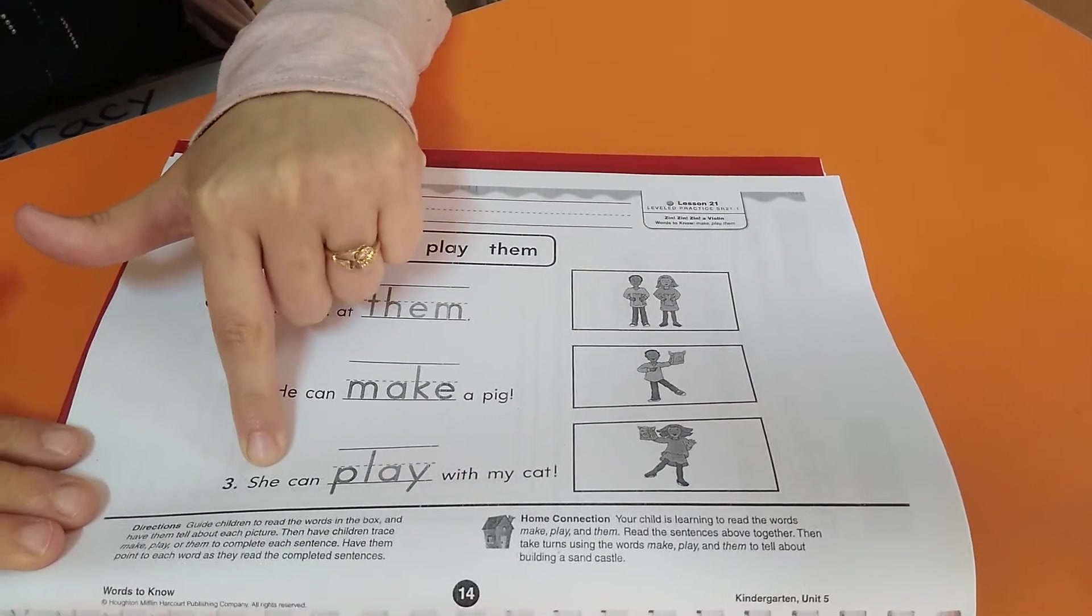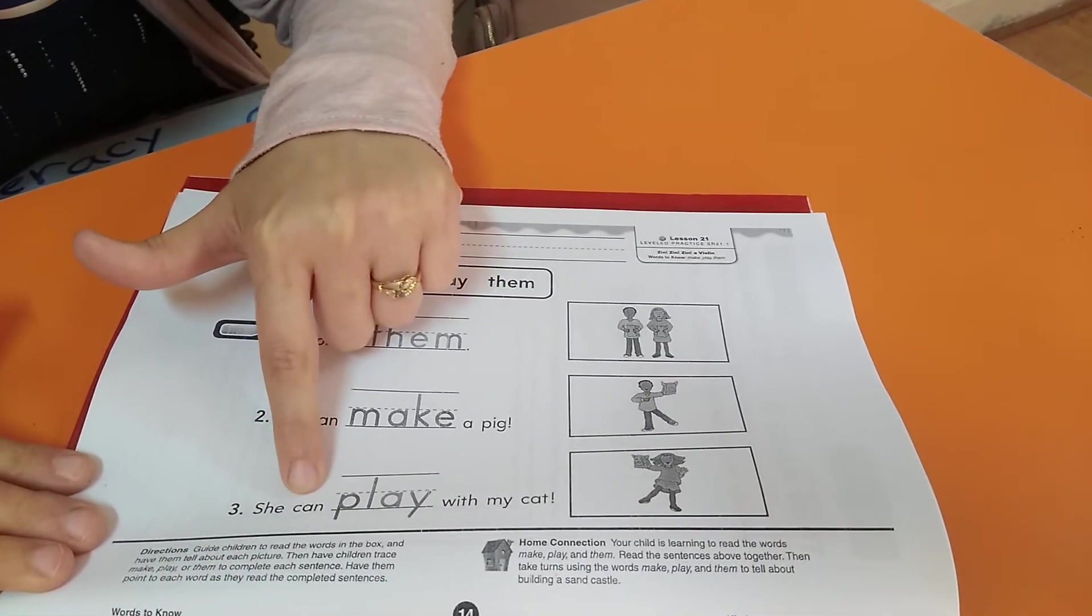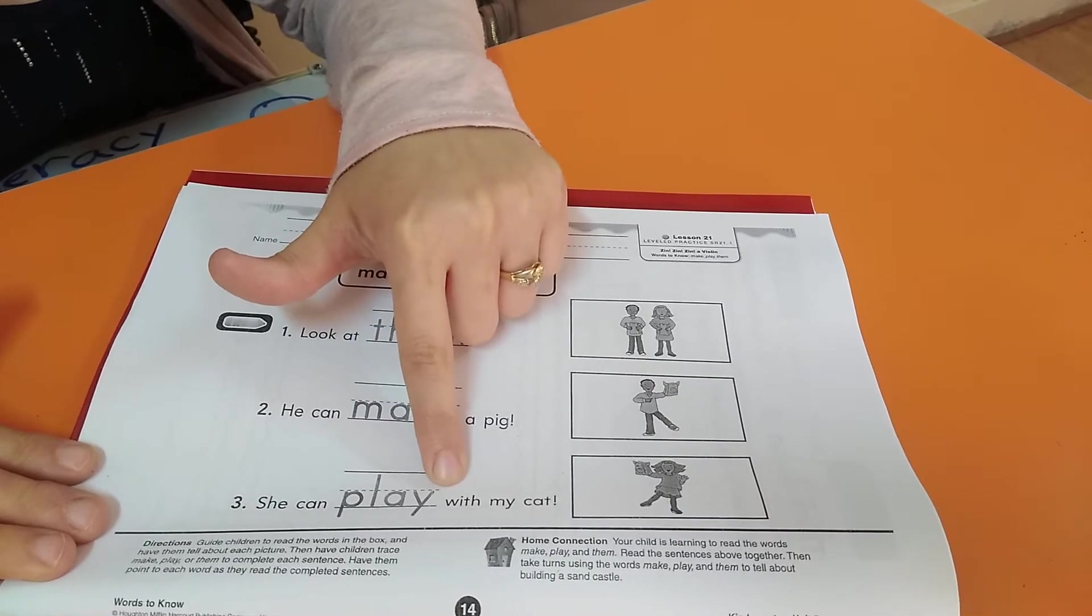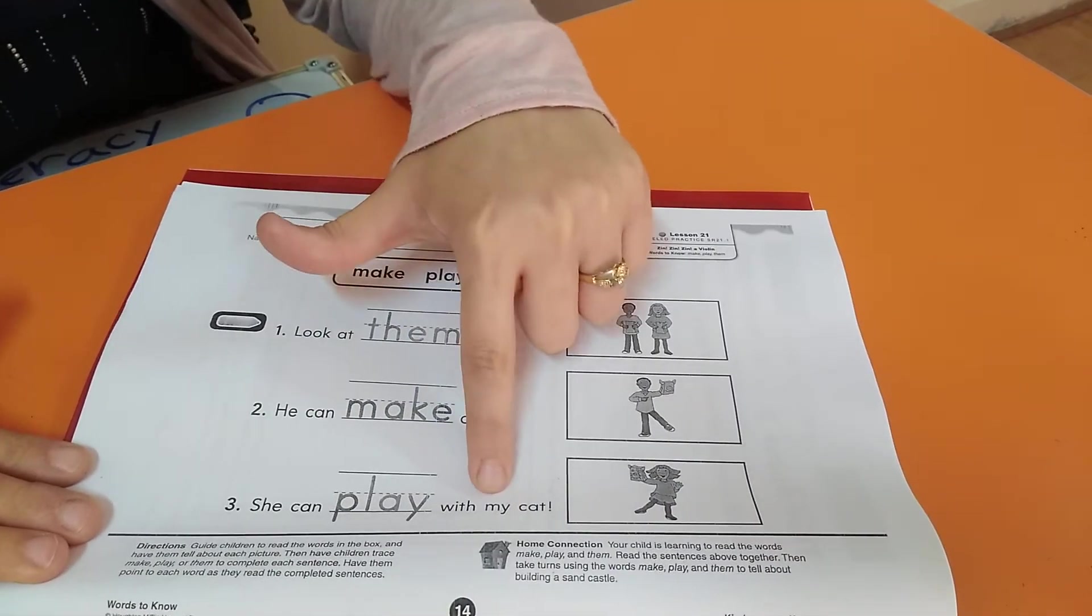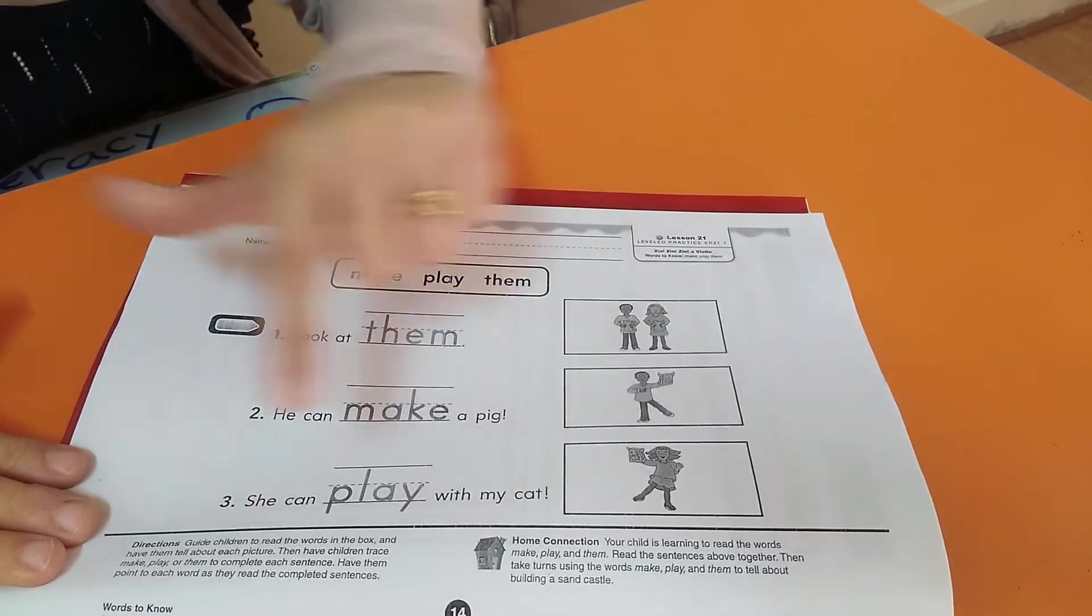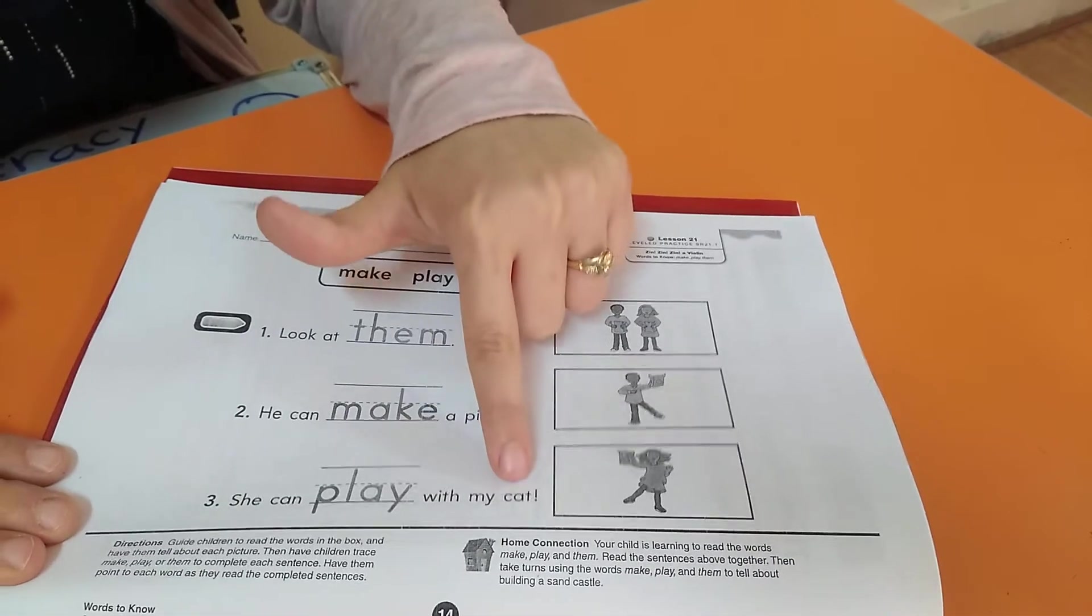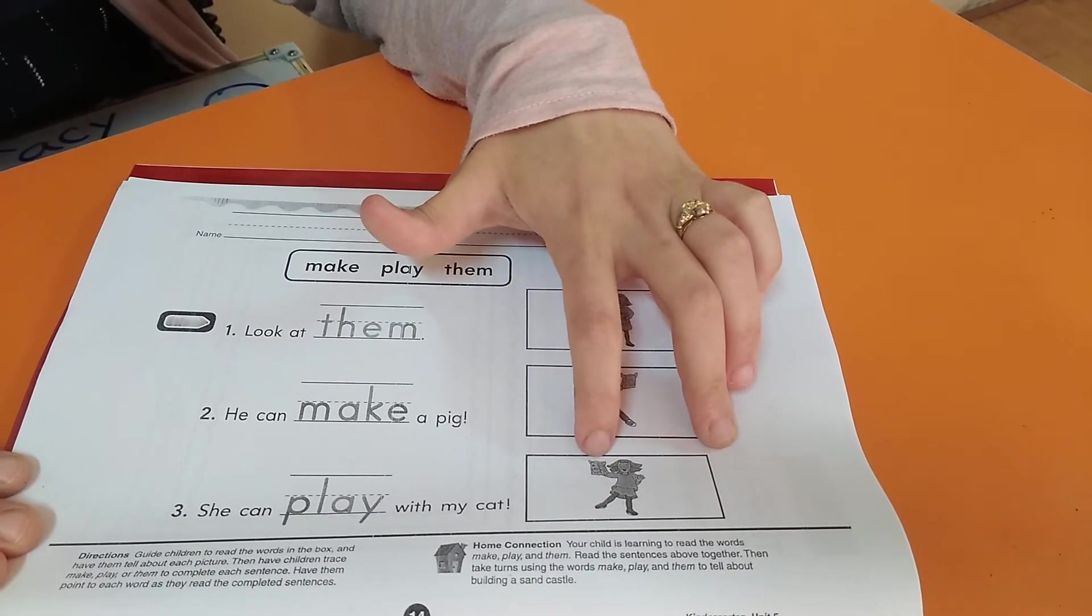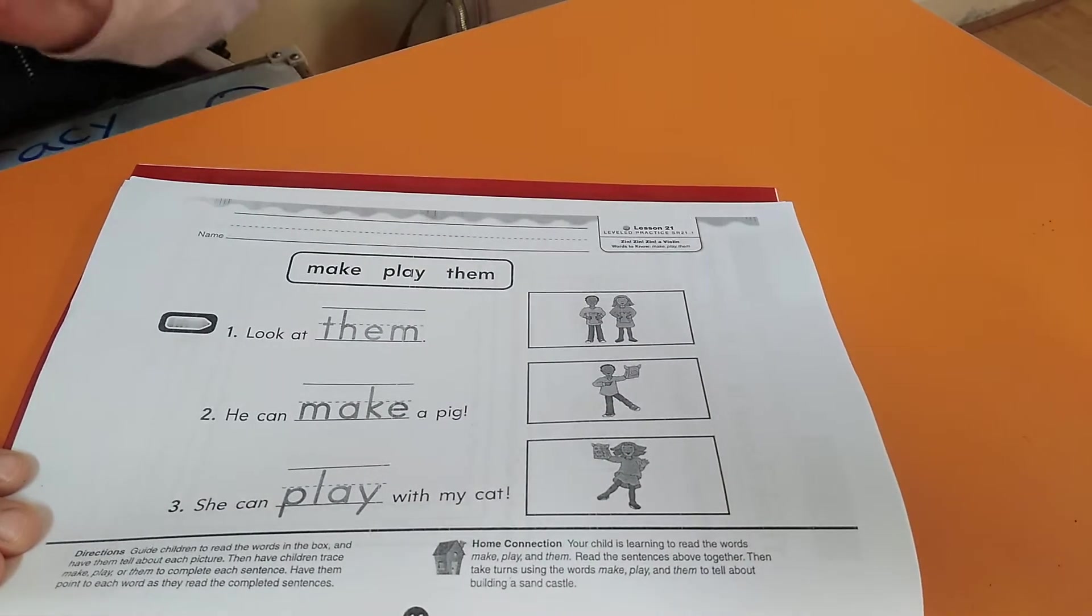Number three. What is this word? She. Excellent. She. She. She can play with. I get out my tongue. With. What is this word? My. Excellent. My cat. She can play with my cat. Here Farida is holding a bag and she draws a cat on it and she can play with my cat. Okay. Excellent.